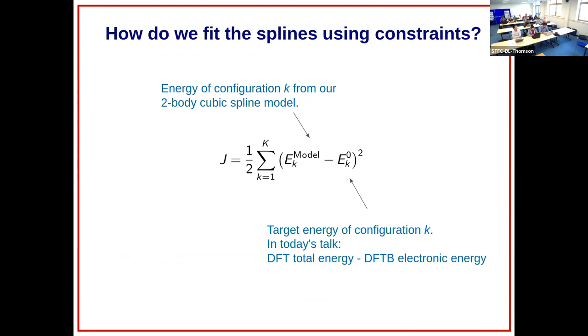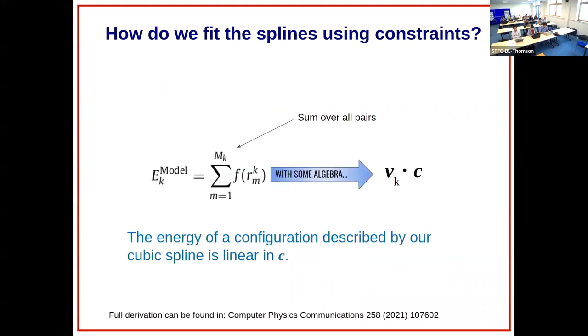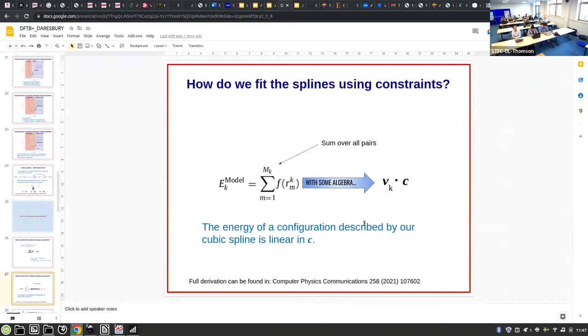You have a set of parameters c and you can impose the constraints you want - they are linear constraints, very trivial to make - and you simply solve. What you need is some kind of objective function, some reference. In our case that would be this repulsive energy. We want to obtain the set of c coefficients that minimize the energy E_k model, that's the energy described by our spline, and the reference energy - a simple objective function like that we want to minimize.